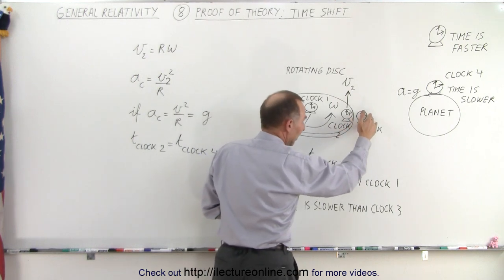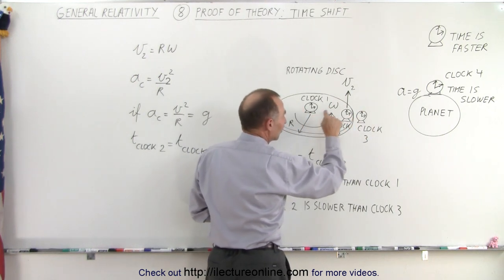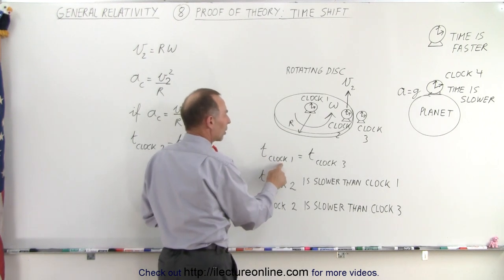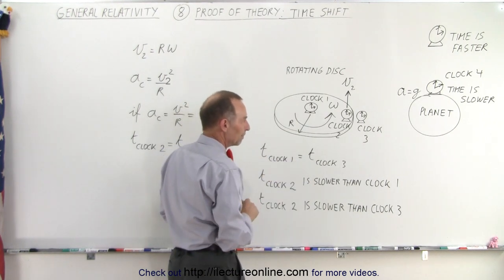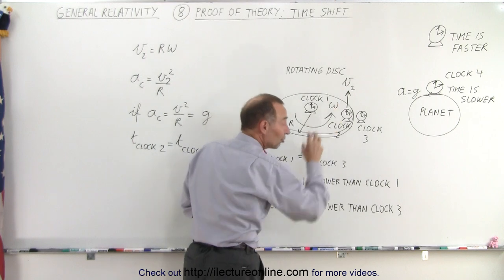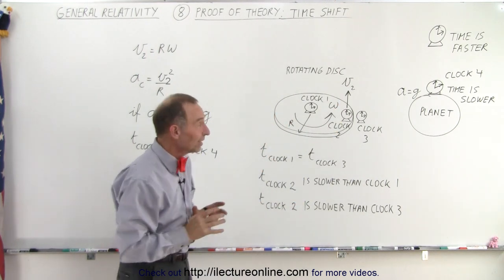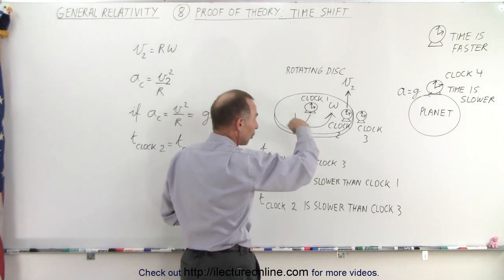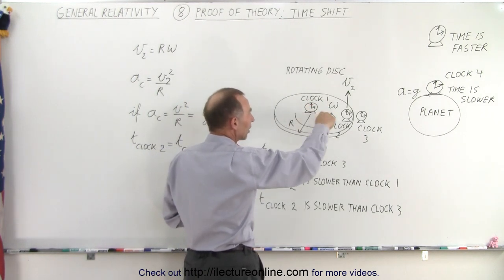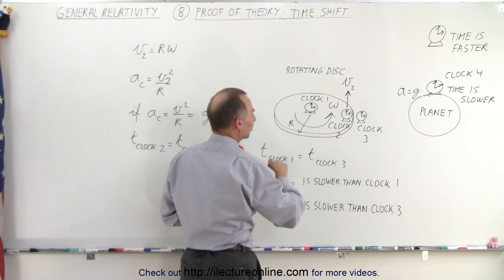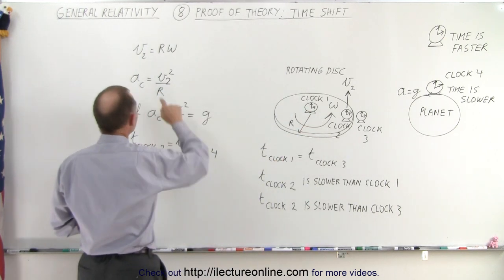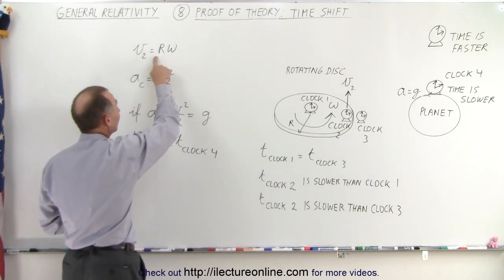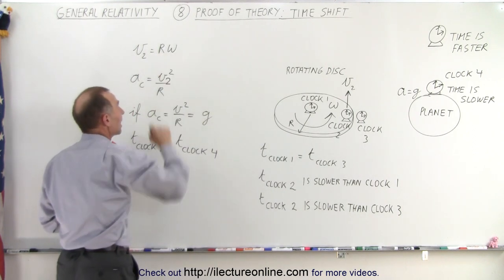There's no artificial gravity outside here either, and so what we find is that the time on these two clocks happens to be the same. The time on clock one is equal to the time on clock three. But clock two, which is placed at the very edge of the rotating disk, is experiencing artificial gravity. If the disk is rotating at the angle of velocity omega, and the radius of the disk is r, then we can calculate that the velocity of clock two, we'll call it v sub two, is equal to the product of the radius times the angle of velocity.